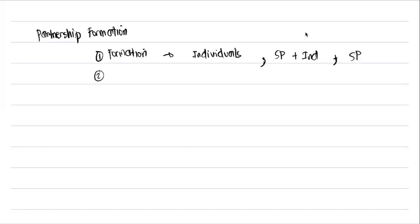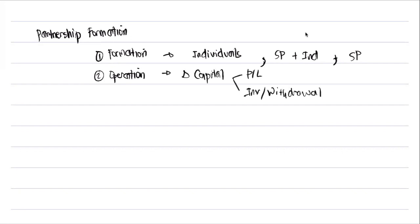Next, we have partnership operation. In partnership operation, the partnership starts to do business. Since they are now operating, we normally have changes in the capital due to profit or loss, investment, or withdrawal. Generally, what we account for in partnership operation is the profit or loss — we compute the amount and distribute it to the partners, divided by their profit or loss ratio.